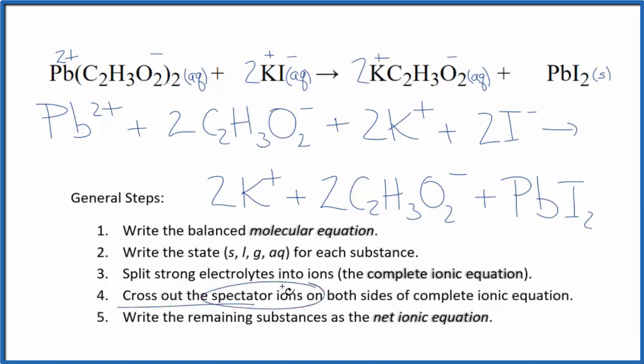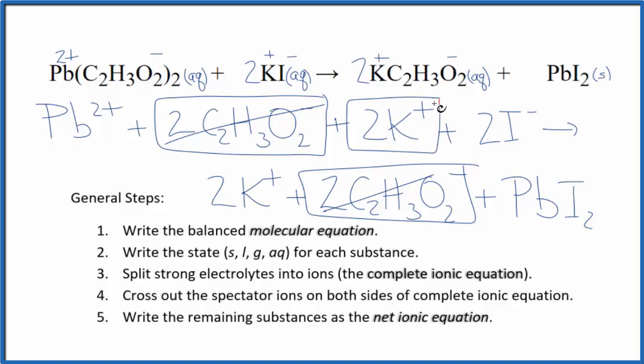Now we can cross out the spectator ions. They're on both sides of the complete ionic equation. So we have two acetate ions here in the reactants. And then again, two in the products. Let's get rid of those. Two potassium ions here in the products. And what's left?